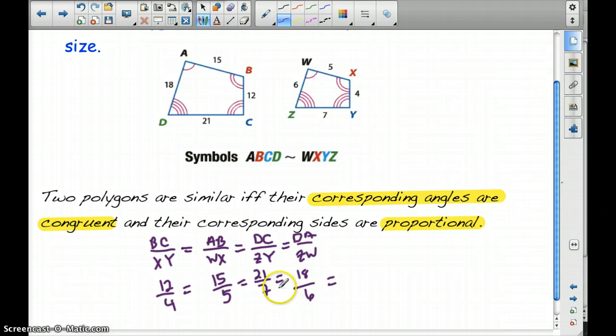And again, order matters. Notice I just have DA is congruent to ZW. Again, colors matching up. The order has to matter. Yeah, they all simplify down to 3 over 1. So these are proportional, and therefore these are similar polygons. So we can say this, we can write this similarity statement.